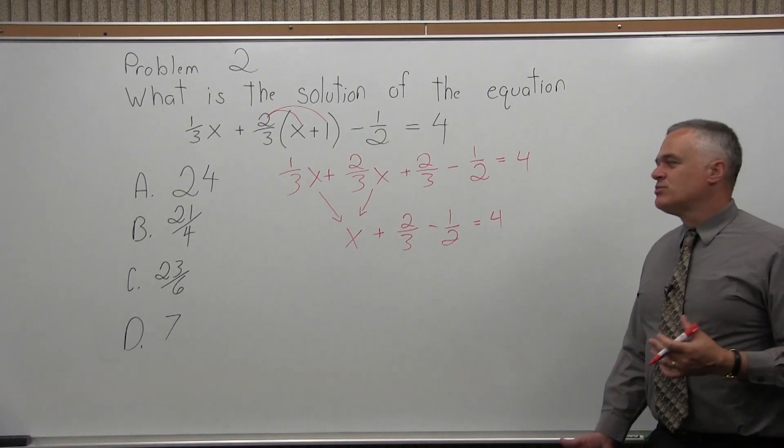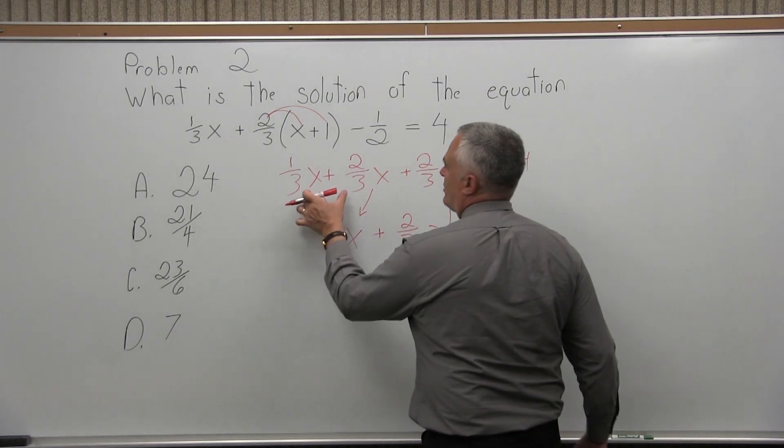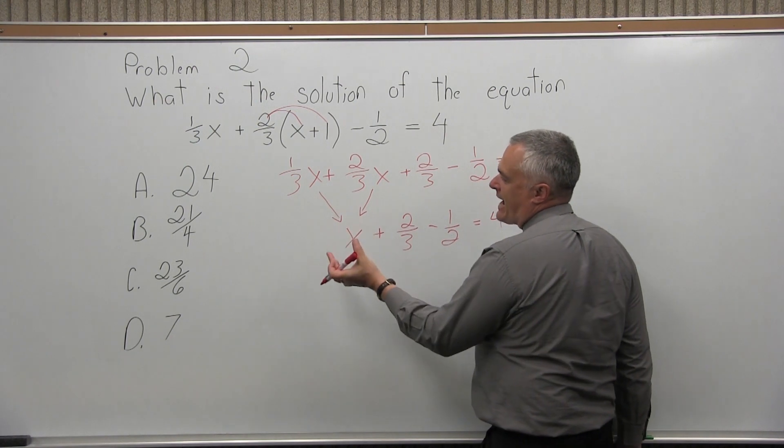So, 1 third x plus 2 thirds x, that's going to give me x. And then, I'll leave the other stuff. I'm going to have x plus 2 thirds minus 1 half equals 4. I put the x's together. I just wrote x.